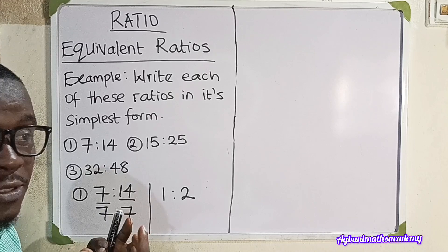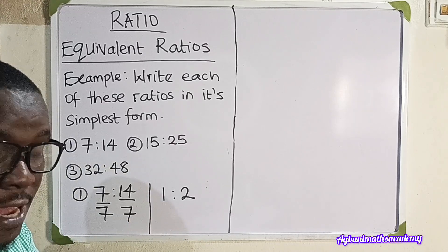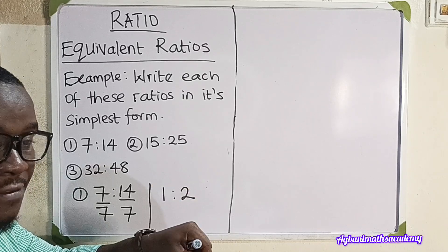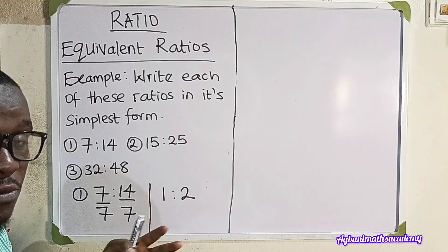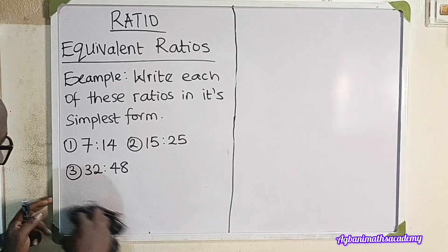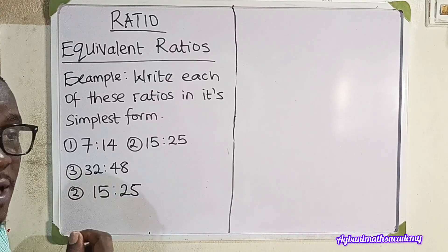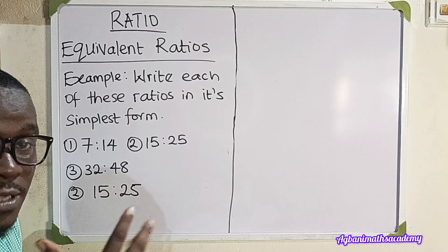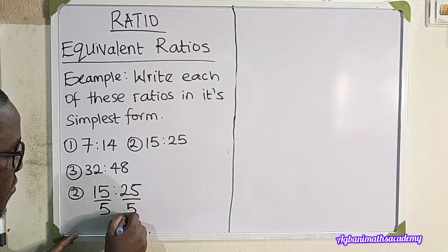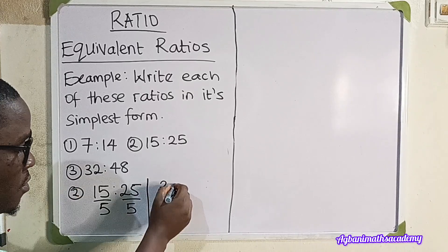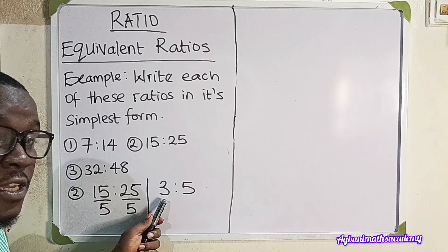This is important in sharing items. For example, if you share 7 here and 14 there, or for every one you put here you put 2 there — different processes, but at the end of the day you share the same way. Now, number two: 15 is to 25. We look for a number that divides both 15 and 25 without a remainder — that number is 5. 15 divided by 5 is 3, and 25 divided by 5 is 5. So 15 is to 25 in its simplest form is 3 is to 5.